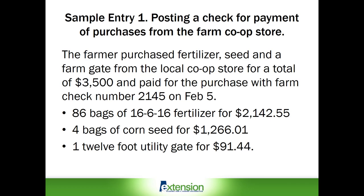The details of the purchase are on the co-op paper invoice, which is also considered our accounting source document. The farmer bought 86 bags of fertilizer for $2,142.55, four bags of corn seed for $1,266.01, and one 12-foot utility gate for $91.44.